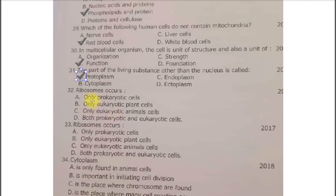Ribosomes occurs. A. Only prokaryotic cells, B. Only eukaryotic plant cells, C. Only eukaryotic animal cells, D. Both prokaryotic and eukaryotic cells. The correct answer is the option D. Both prokaryotic and eukaryotic cells. Next question is again the repeat question about the ribosomes.